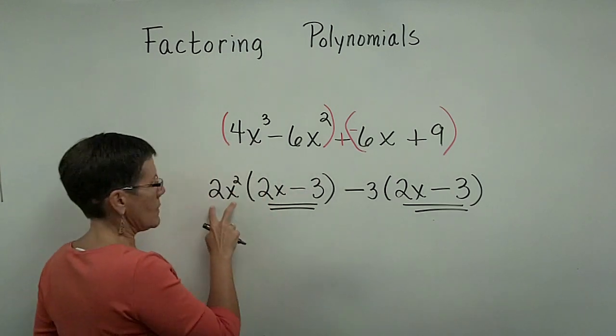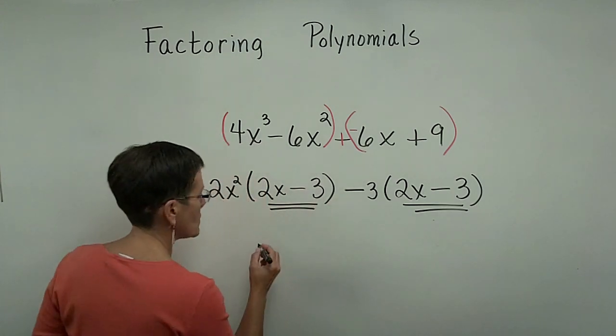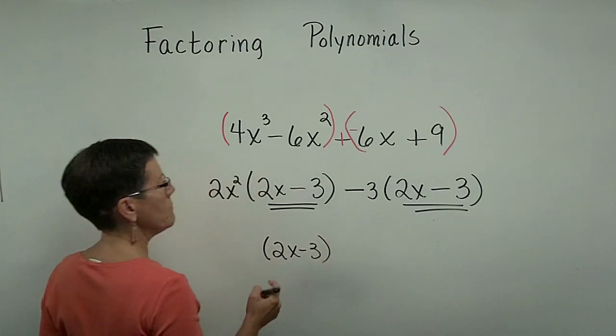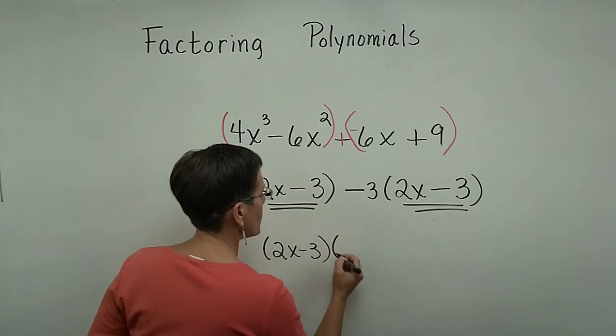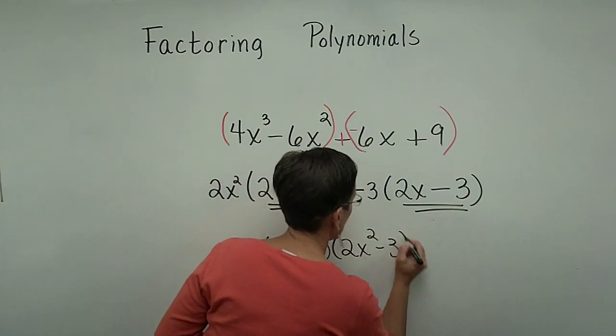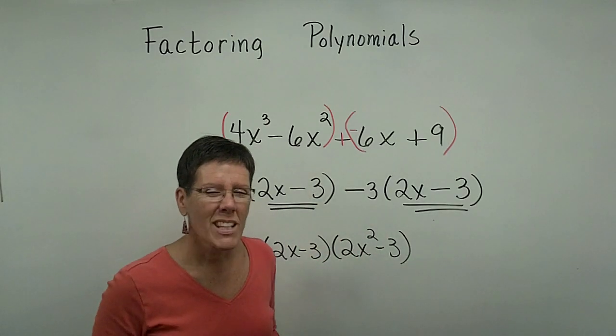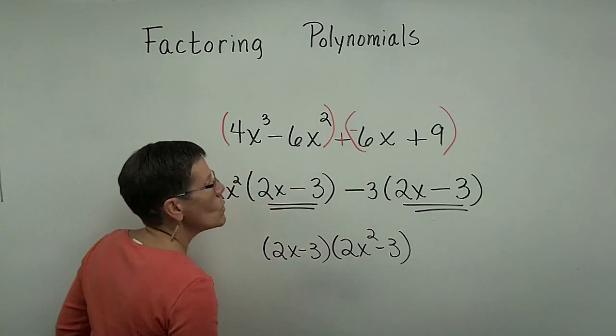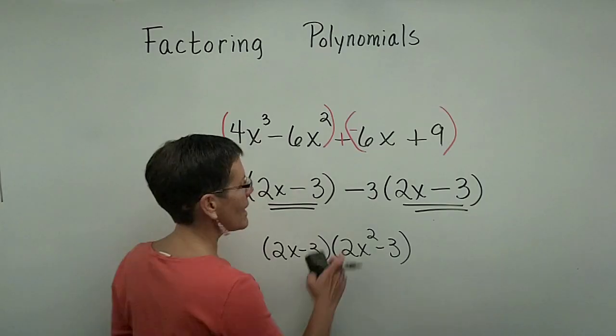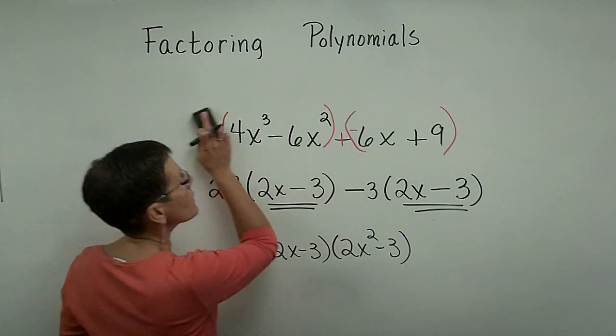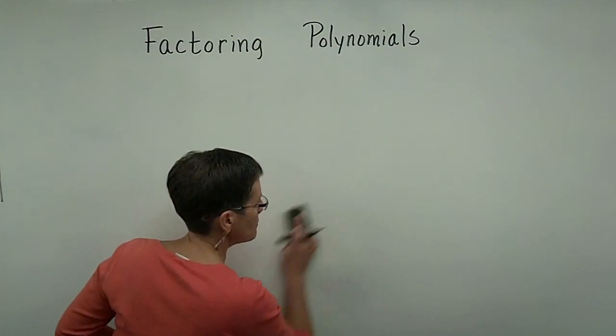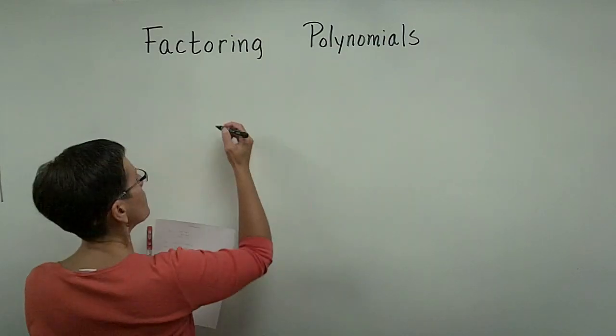I write them down once, and then the 2x squared minus 3 go in their own set of parentheses. I tend to put the 2x minus 3, the common binomial that's in each of these two terms, and then the 2x squared minus 3. But order does not matter. Let's do one more where the only common factor is a 1, not a 3 or a 2x squared, that the only common factor in this factoring by grouping is a 1.